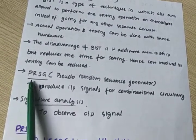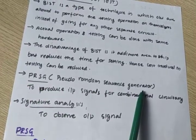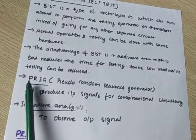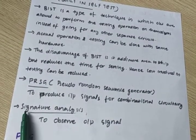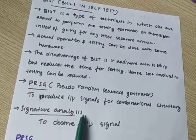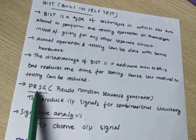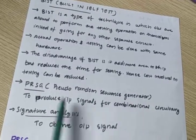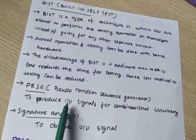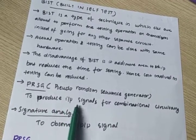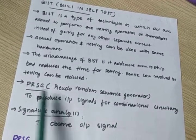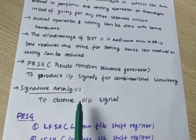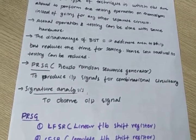Under BIST we have two main areas: one is PRSG and another one is signature analysis. PRSG means pseudo random sequence generator. It generates random sequences as test input signals for combinational circuitry. Signature analysis is normally used to observe the output signal.